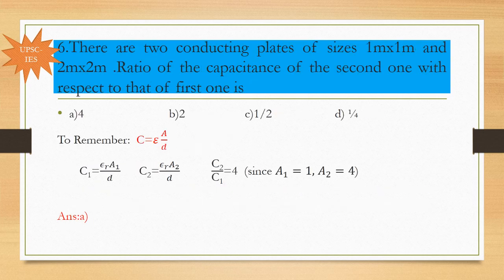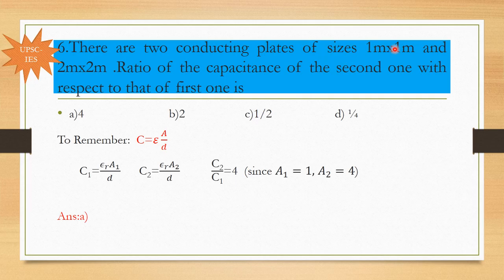Next problem: Two conducting plates of sizes 1m×1m and 2m×2m. Find the ratio of capacitance of the second to the first. Using C = εA/D: area A₁ = 1 m², area A₂ = 4 m². So C₂/C₁ = A₂/A₁ = 4. The answer is option A.